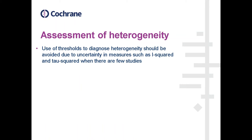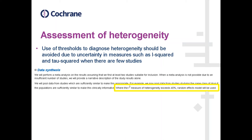Assessment of heterogeneity. A very common error is people who try to use thresholds to diagnose heterogeneity — we do not encourage this. People will use the I-squared or tau-squared by itself and say things like 'if the I-squared measure of heterogeneity exceeds 40%, a random effects model will be used.' We see this all the time and do not encourage it. The I-squared measure is not always reliable, and the I-squared measure by itself doesn't even tell you that much. When looking at heterogeneity, it's more than just one number — it's about considering the evidence as a whole.